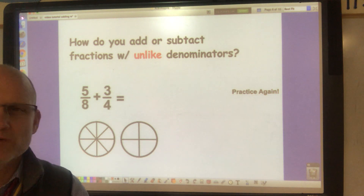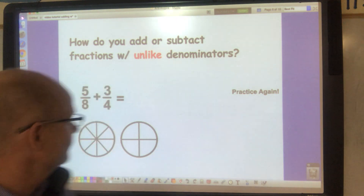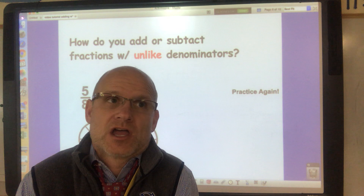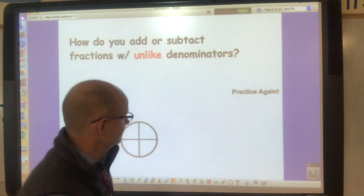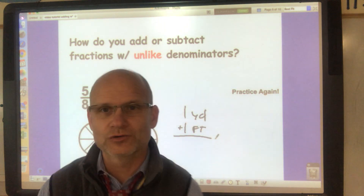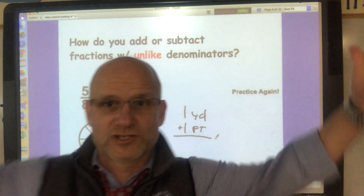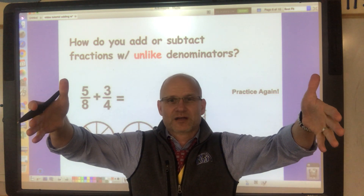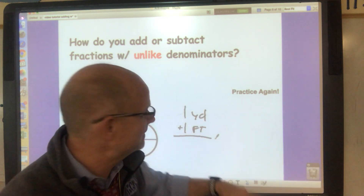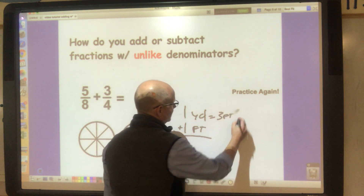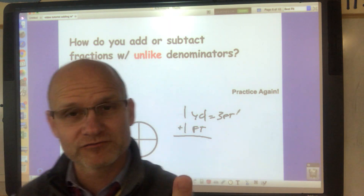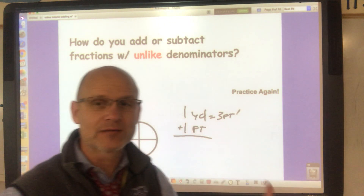So the real question is: how do you add fractions with unlike denominators? For example, five-eighths plus three-fourths. It's like asking how you add unlike units — what's one yard plus one foot? You wouldn't say two, because a yard and a foot are different lengths. You'd convert: one yard equals three feet, so three feet plus one foot is four feet.